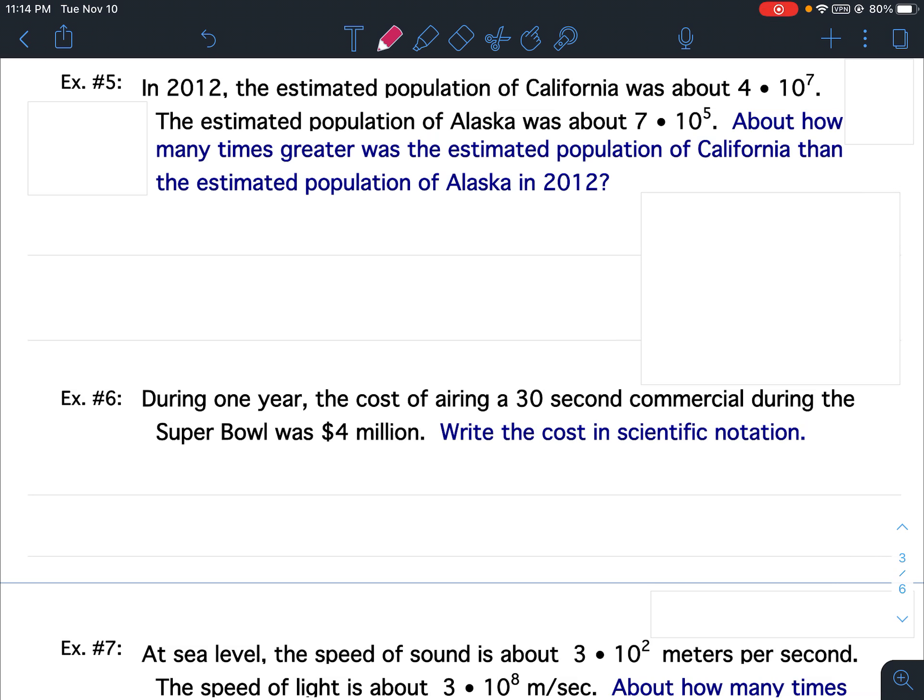Scientific Notation Lesson 5 Notes. Example number 5. In 2012, the estimated population of California was about 4 times 10 to the 7th. The estimated population of Alaska was about 7 times 10 to the 5th. About how many times greater was the estimated population of California than the estimated population of Alaska in 2012?